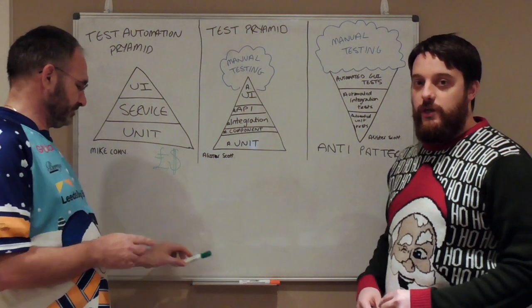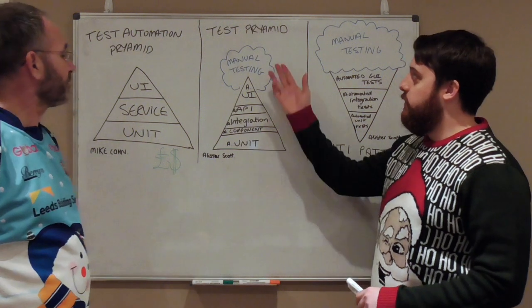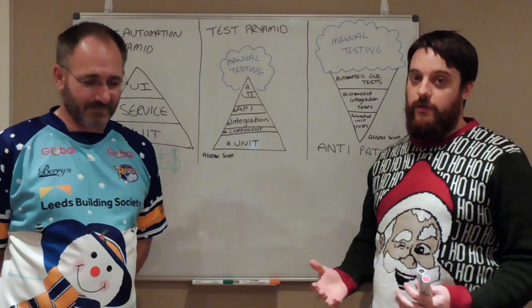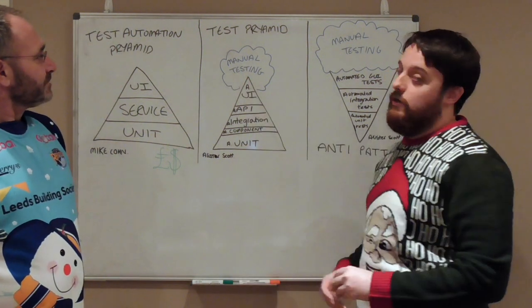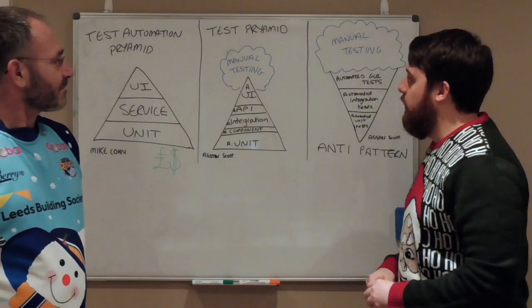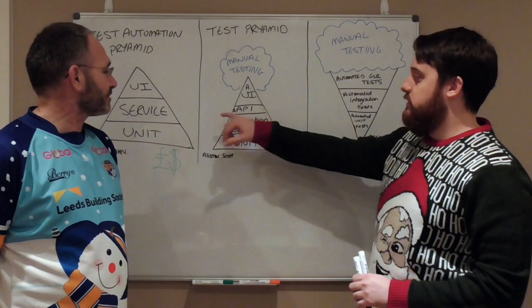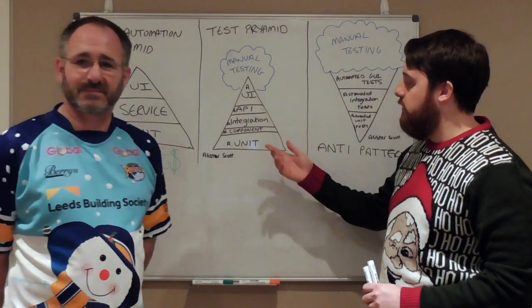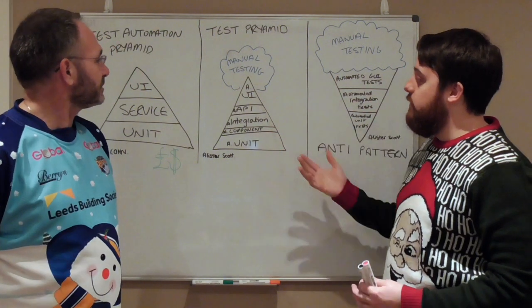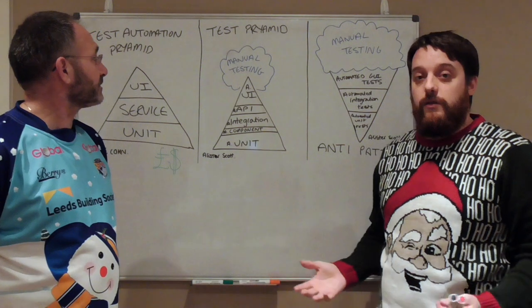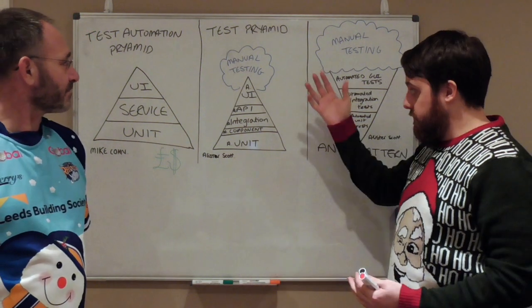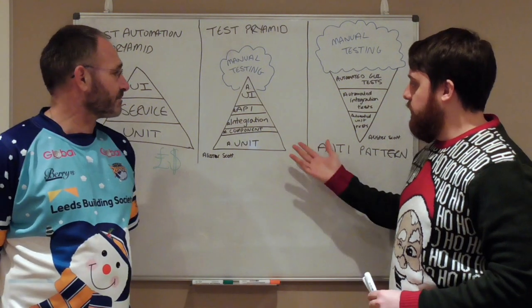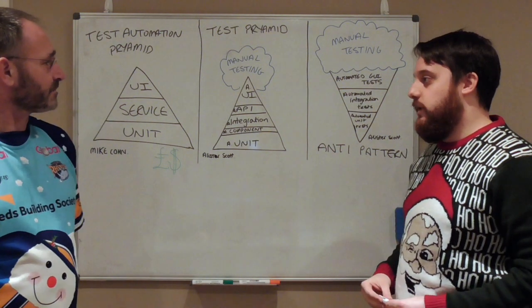We noticed a small but quite significant change: the word automation seemed to get dropped from when everyone referenced this pyramid, and it became known as the test pyramid. People then added a delightful cloud at the top to describe manual testing. The service layer started being expanded to involve API, integration, and component testing. The biggest difference is it became known as the testing pyramid — it wasn't about automation anymore, it was about a complete lifecycle of testing, and that's where we started to run into various issues.